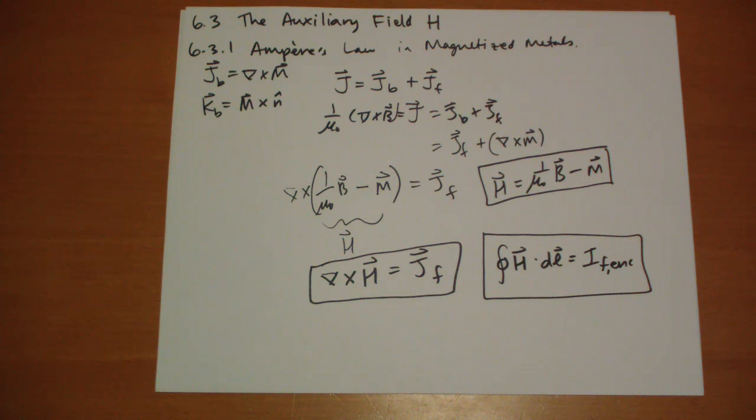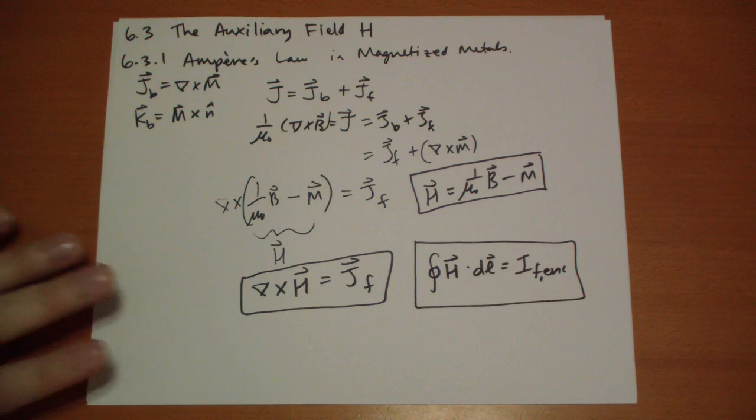Now we can use Ampere's Law with real matter. Just like the D vector gave us an opportunity to use Gauss's Law with real matter, we'll see as we go through examples that the auxiliary field H does not give you everything you want, but it gives you everything you generally need. So let's do some examples. Thanks for your time. Bye.